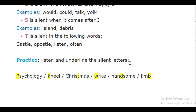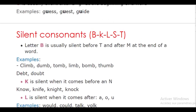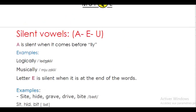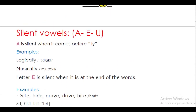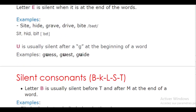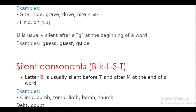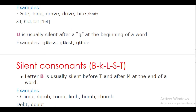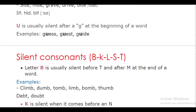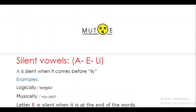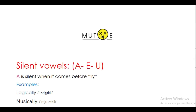And that's it for our lesson today. We have seen silent letters — silent vowels like A, E, and U — and silent consonants like B, K, L, S, and T. I hope this lesson was clear enough. If you like this video, give us a thumbs up. You can share this video with your friends. See you next time.